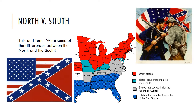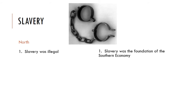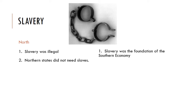Today we're going to talk about, in four categories, how the North and the South differed in attitudes. The first one — probably the most obvious — is slavery. In the North, slavery was illegal. In the South, it was the foundation of the Southern economy because of all the plantations. Because the Northern economy relied on businesses and shipping, they did not depend on a lot of manual labor and did not need slaves. But in the South, states felt that they needed slavery to keep up with farming.